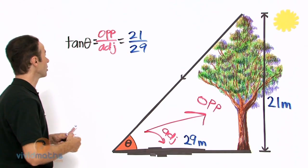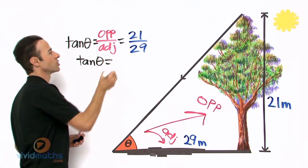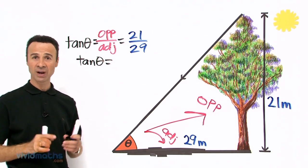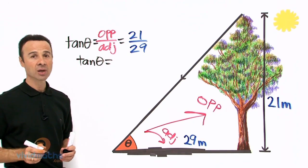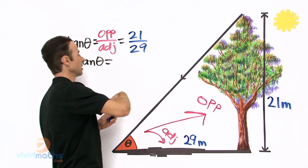Okay cool, now let us continue. Let us go tan theta equals, now on the calculator I like to turn into a decimal, but if you prefer to keep as a fraction that is fine. 21 divided by 29 as a decimal is 0.724, let us write that in.